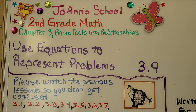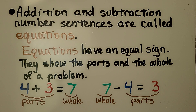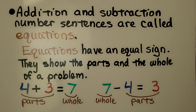Lesson 3.9: Use Equations to Represent Problems. Addition and subtraction number sentences are called equations. Equations have an equal sign, and they show the parts and the whole of a problem.